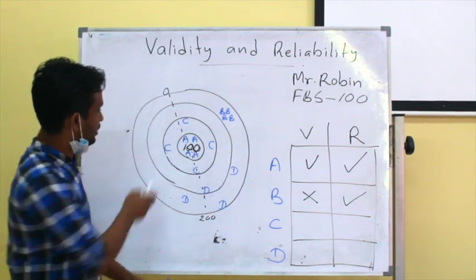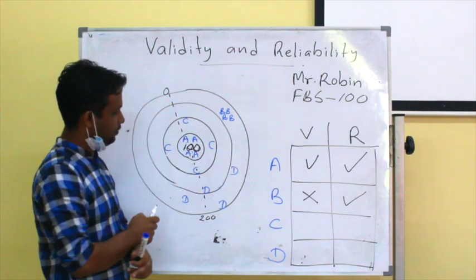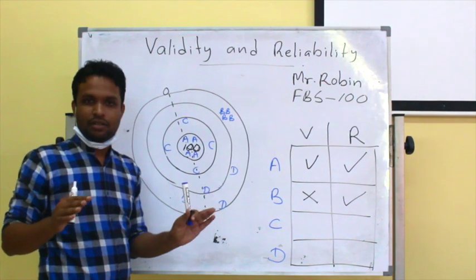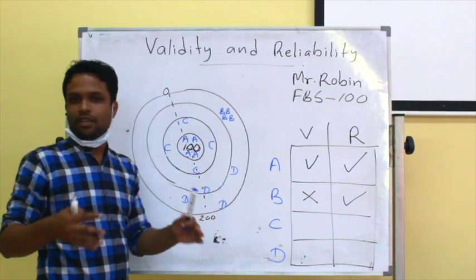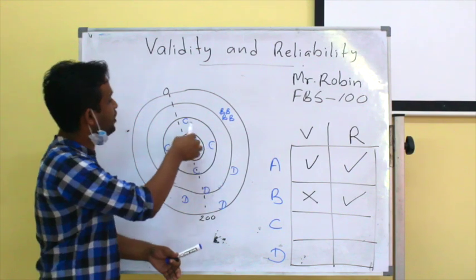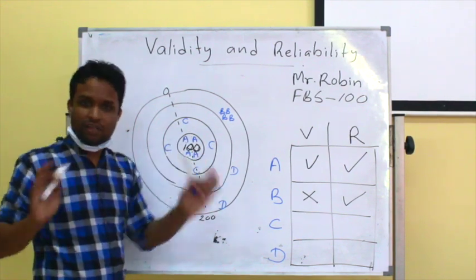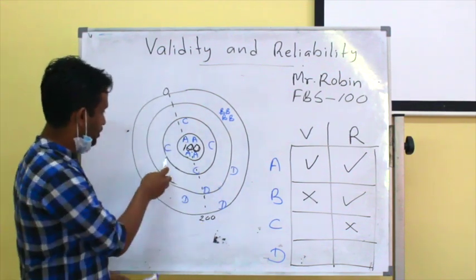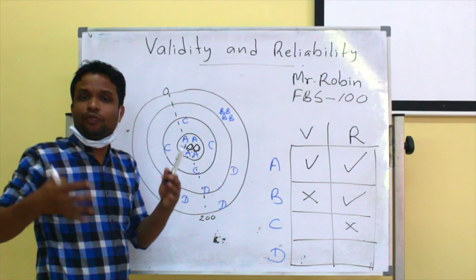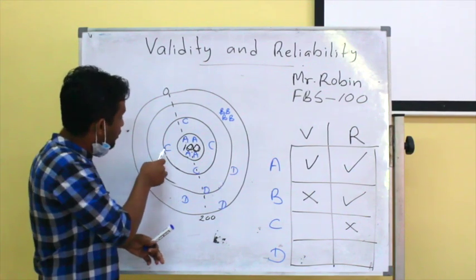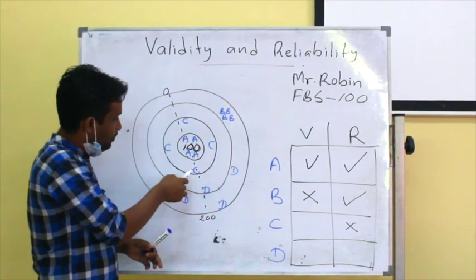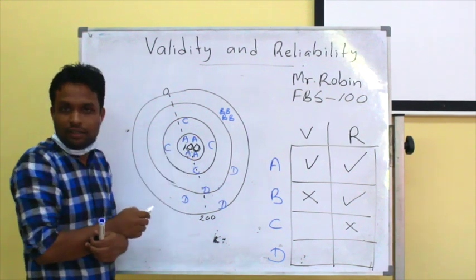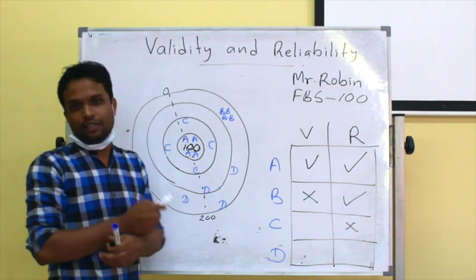Now look at test C. Test C has not produced similar results in repetitive measurements — one reading is here, one here, one here, one here — so it is not a reliable test. However, if you take the average of these four values, you may get a value similar to 100, so we can call test C a valid test.